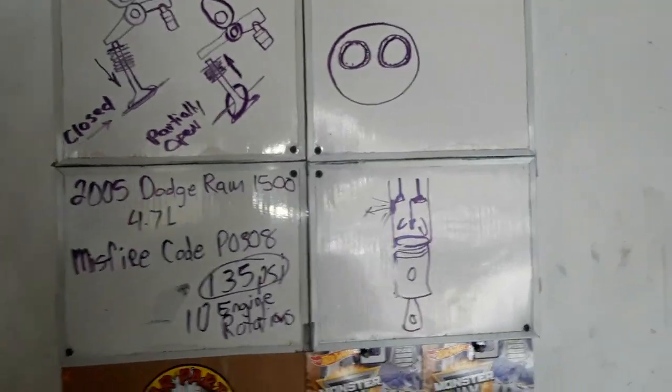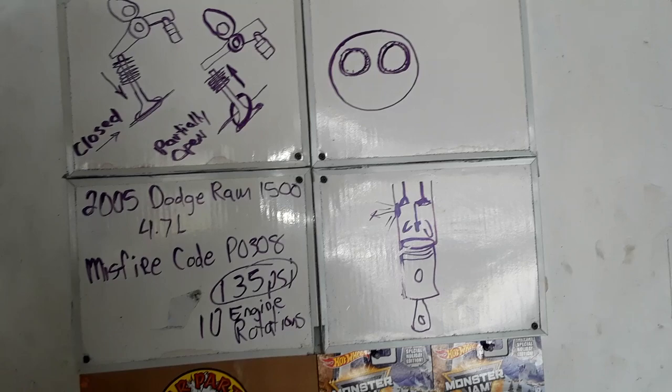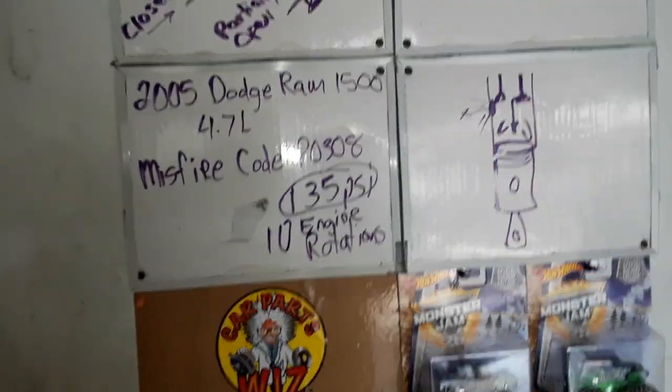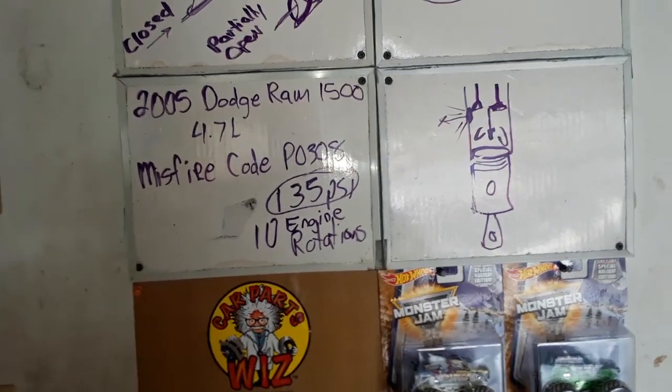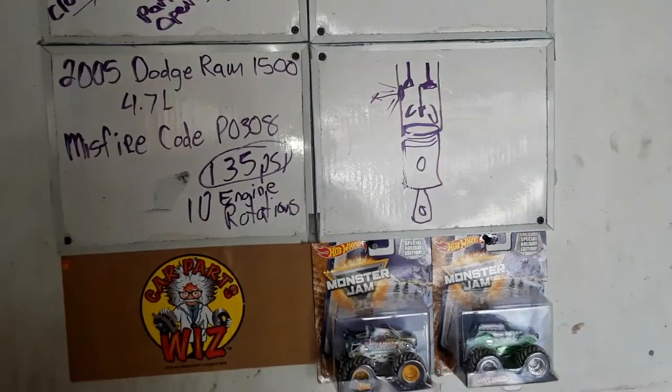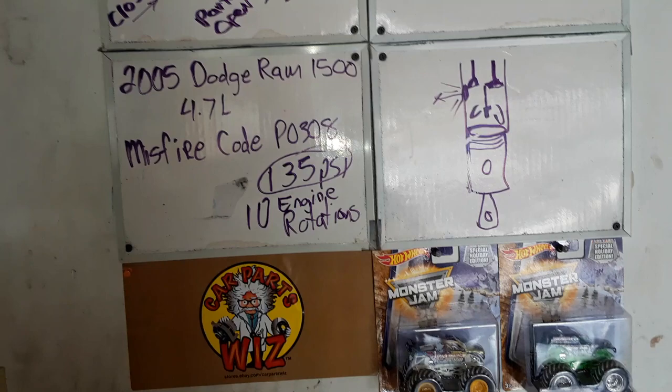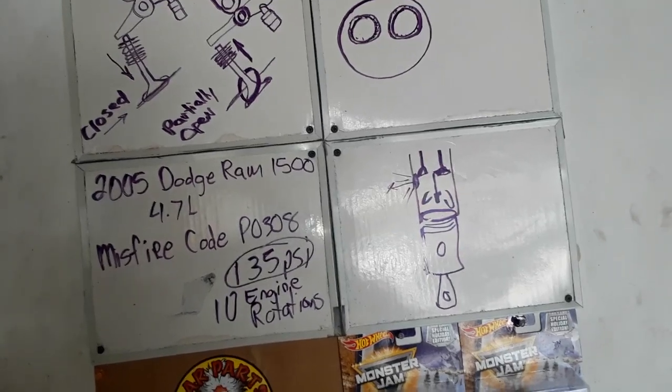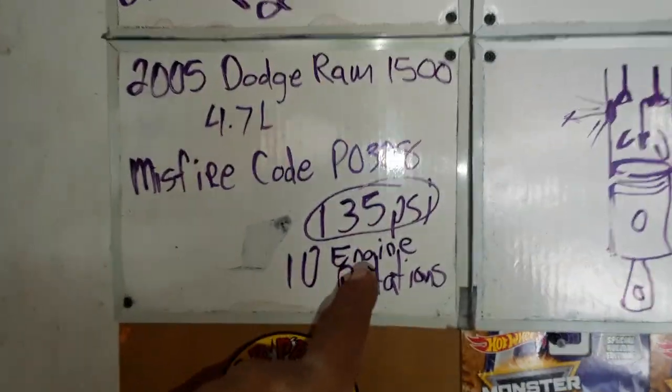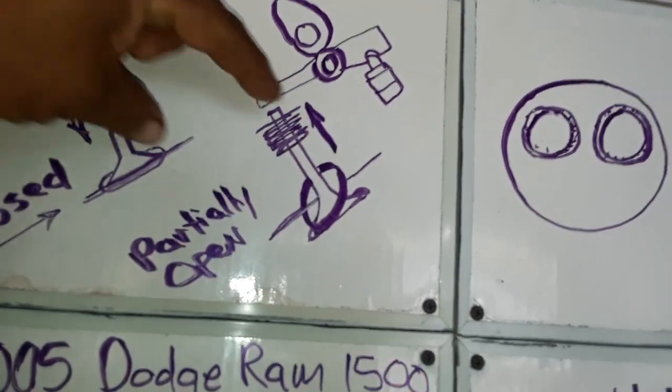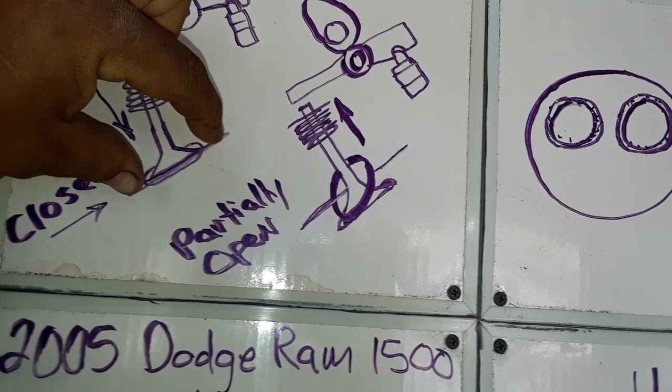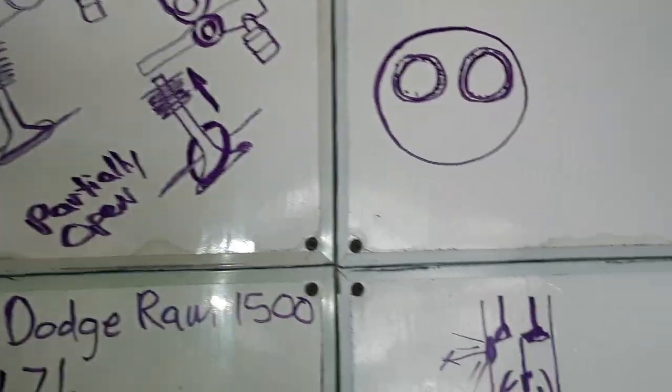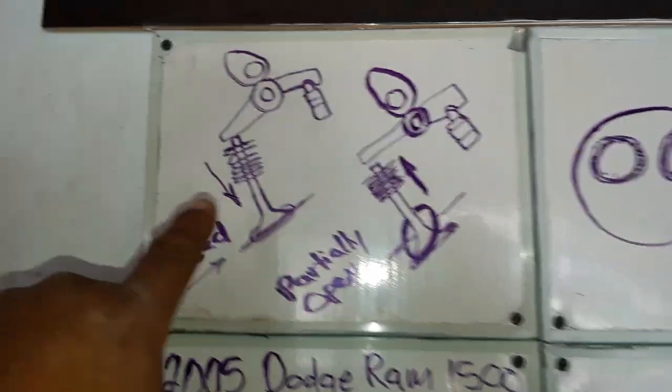It doesn't necessarily have to be a P0308 - this is just telling me it's cylinder eight. P0300 is a general misfire code. P0301 through P0308 tells you exactly where the misfire is happening. If swapping the coils doesn't work and a new spark plug doesn't work, this could be the issue. The reason I got 135 PSI is that sometimes this will jiggle back in place, so it probably stayed in there during my compression test. When I shut it off, it stopped like that.